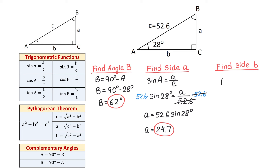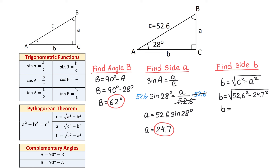We write down the formula B equals the square root of C squared minus A squared, and replace C and A: B equals the square root of 52.6 squared minus 24.7 squared. Using a calculator, we get that B is approximately 46.4 units. I decided to use this formula instead of a trigonometric function because once we know two sides, it seems easier to find the third side using the Pythagorean theorem.